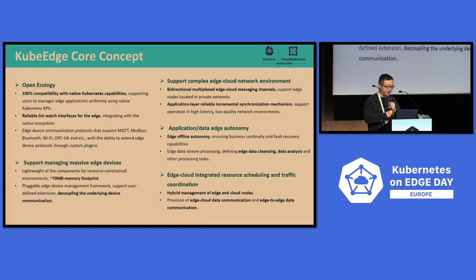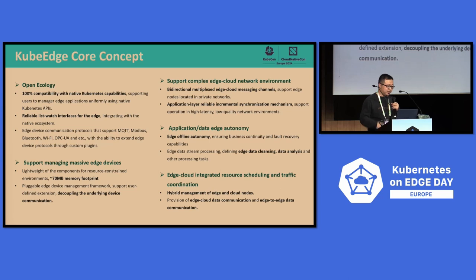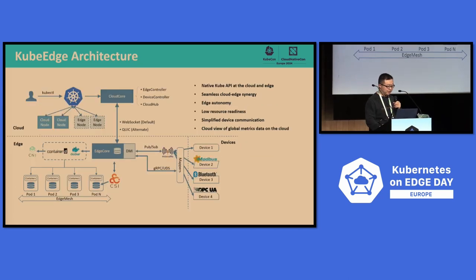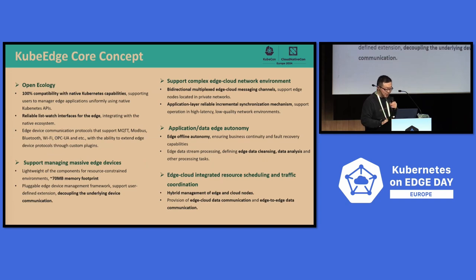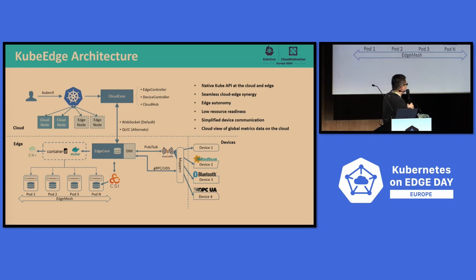The next page covers some core concepts of KubeEdge. The first is open ecology. Because we are built based on Kubernetes, we are fully compatible with the native Kubernetes API. Users can use the Kubernetes API to deploy and manage applications from cloud to edge nodes. Users can also use the Kubernetes API to manage IoT devices. The next is the reliable list-watch interface for the edge, meaning we have the Kubernetes native interface at the edge side, and users can also access the Kubernetes API from the edge side.